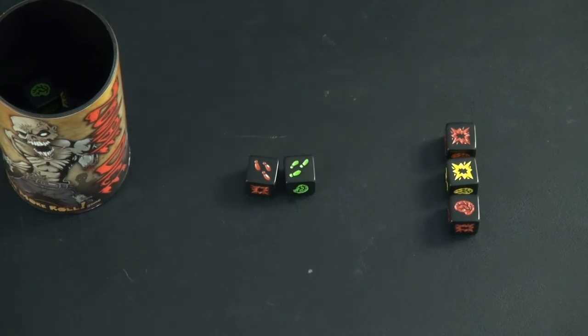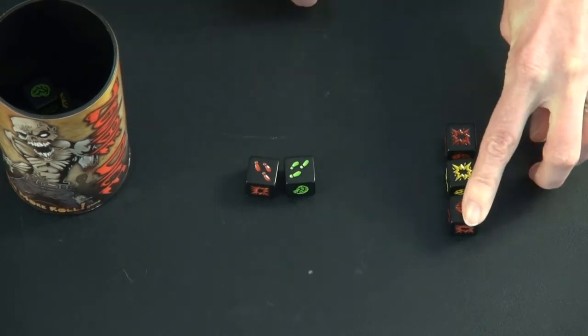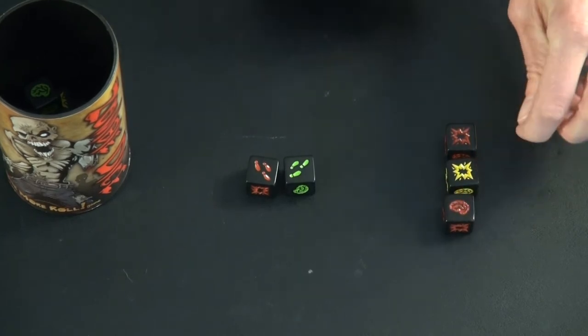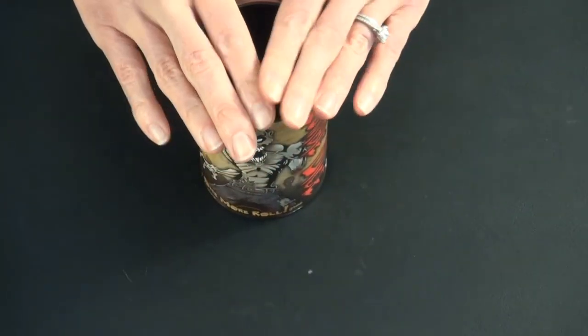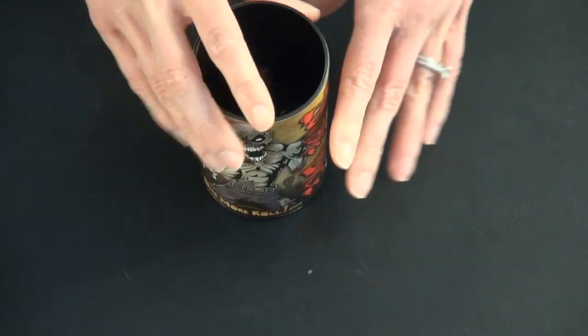So we'll say that this person decides to play it safe. They just keep their one brain. You're going to write this down on a piece of paper or something off to the side. They put all of the dice back in here and pass it on to the next player.